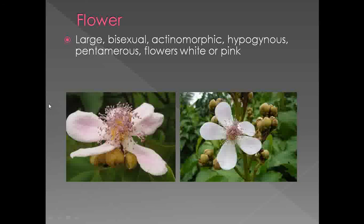About the flowers: the flowers observed under this family are somewhat large. The flowers are pedicellate, bisexual, actinomorphic, and hypogynous. The meaning of hypogynous is the perianth, androecium and gynoecium originate from the base of the ovary. The flowers are pentamerous — meaning the perianth, androecium and gynoecium are present in multiples of five. The flowers observed under this family are either white, pink, yellow or red.